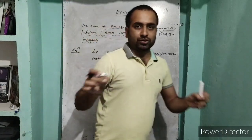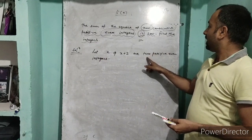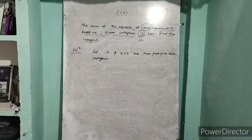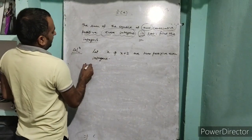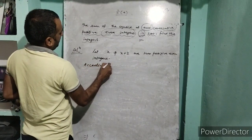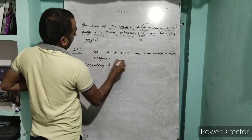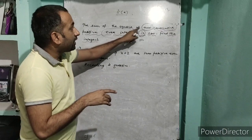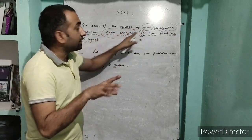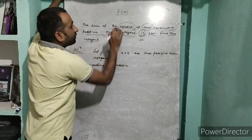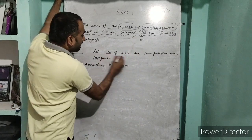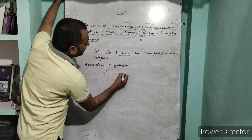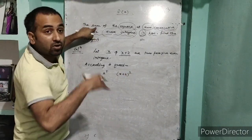The first supposition is complete: let x and x+2 be two positive even integers. Now, according to the question, the sum of the squares of the two consecutive positive even integers is 100. The squares of x and x+2 are x² and (x+2)². The sum means plus, and 'is' means equal.